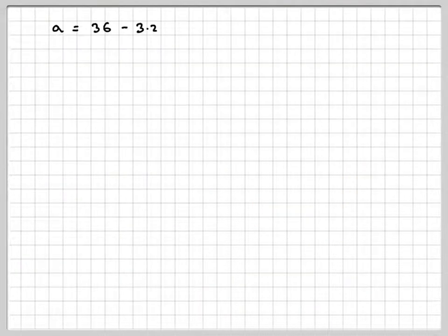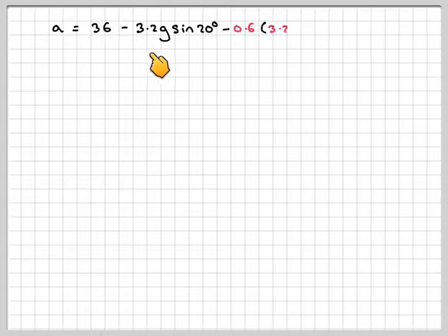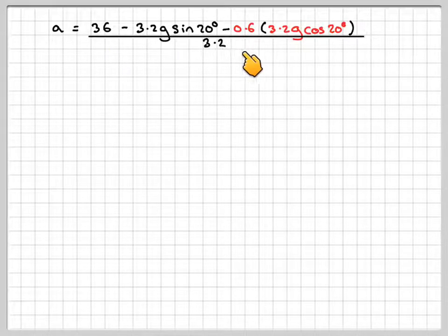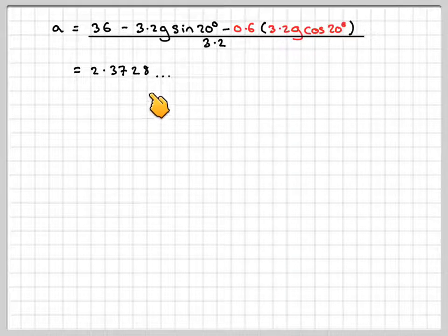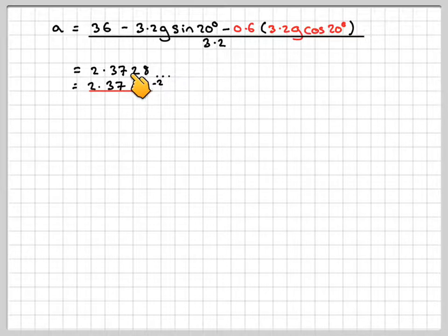From that, we can say that A is going to be 36 minus 3.2g sin 20 minus 0.6 times 3.2g cos 20 divided by 3.2, which gives me 2.3728, which to three significant figures is 2.37. This value you should put in a memory of the calculator, because you're going to use it later in the question.